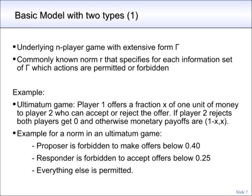I will present now the basic model, which allows only for two types. There is an underlying n-player game with the extensive form gamma, and there is a commonly known norm R that specifies for each information set of the underlying game which actions are permitted or forbidden. For an example, let's consider an ultimatum game. Player one can offer a fraction x of one unit of money to player two, who can accept or reject the offer. If player two rejects, both players get zero; if he accepts, player two gets x and player one gets one minus x. An example of a norm in an ultimatum game would be that the proposer is forbidden to make offers below 40%, a responder is forbidden to accept offers below 25%, and everything else is permitted.